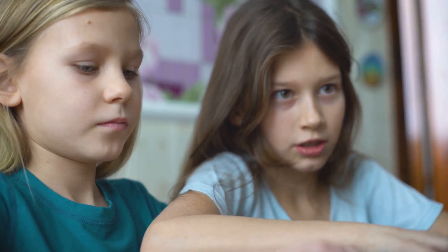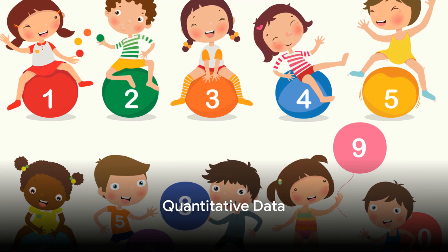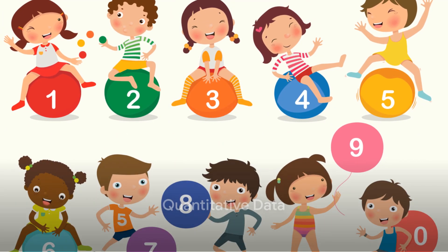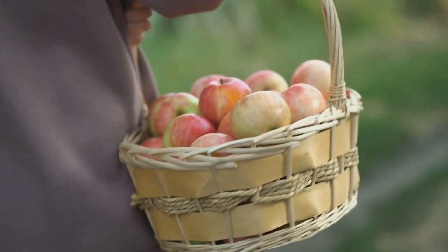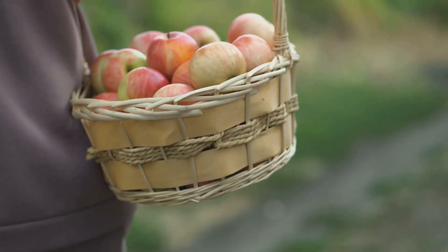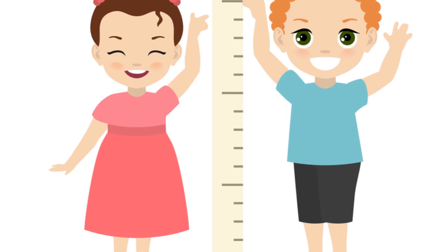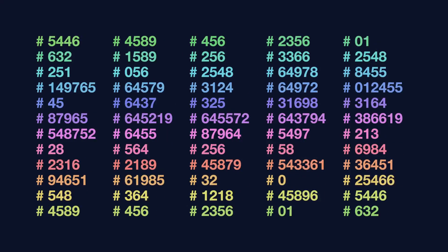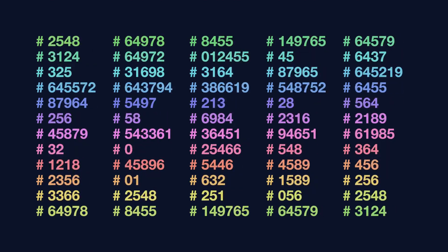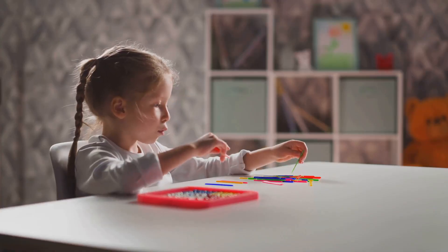The two main types we'll talk about today are quantitative and qualitative data. First up, quantitative data. Think of this as anything you can count or measure — like the number of apples in a basket, the height of a building, or how fast a car can go. All these things can be counted or measured, and therefore they give us quantitative data. They usually come in numbers and can be divided into two groups: discrete and continuous.